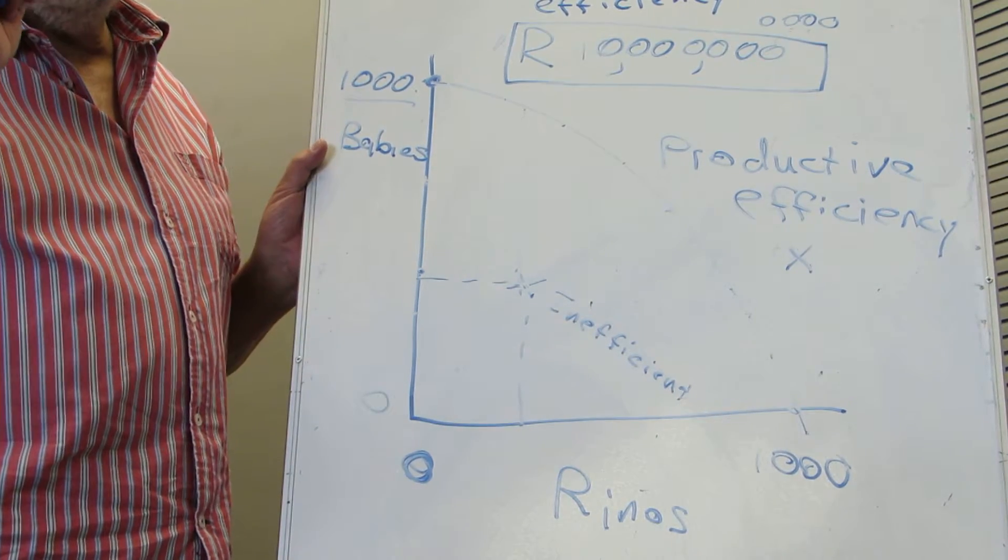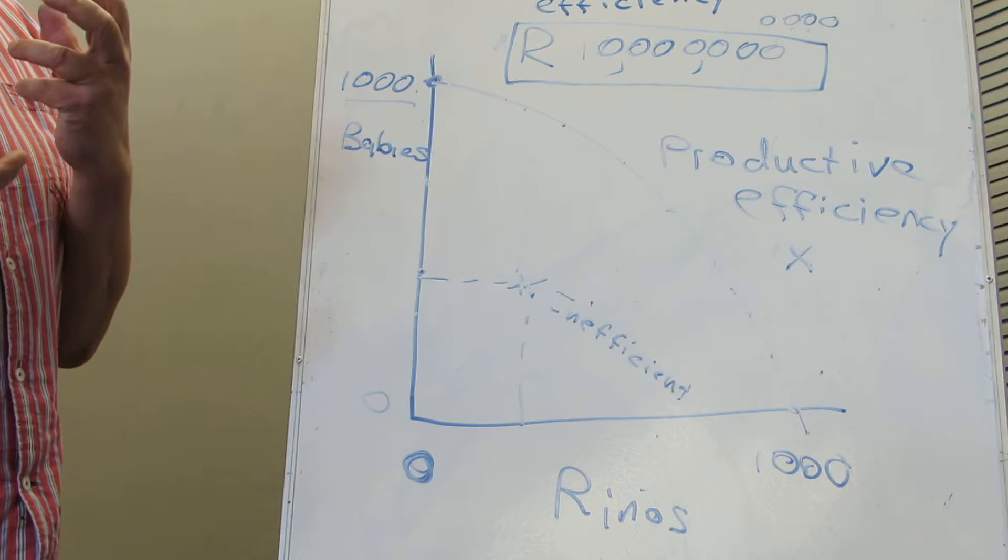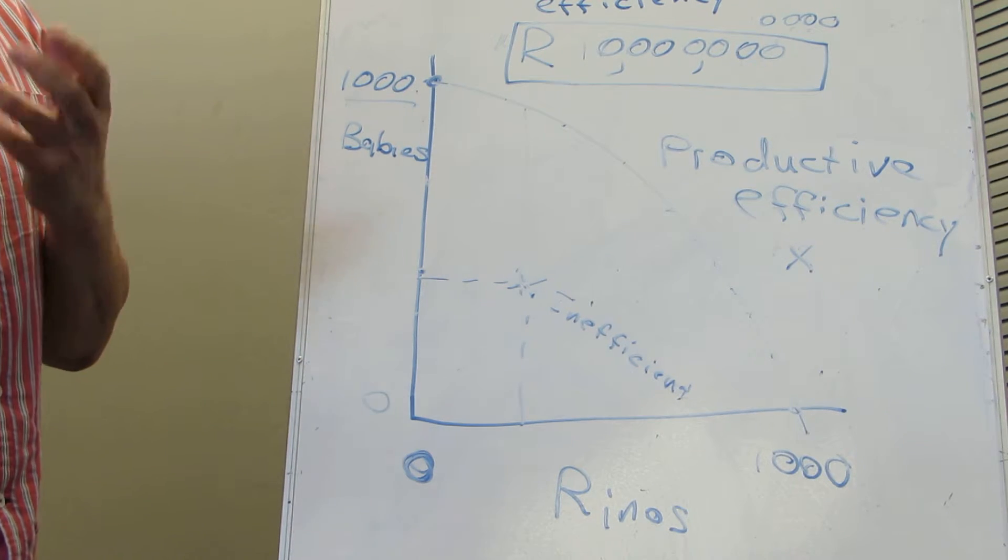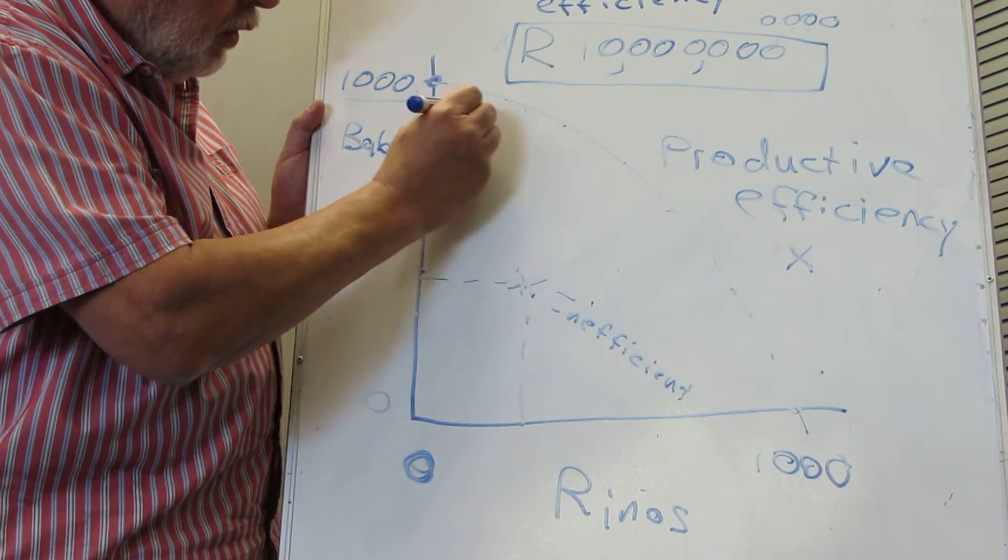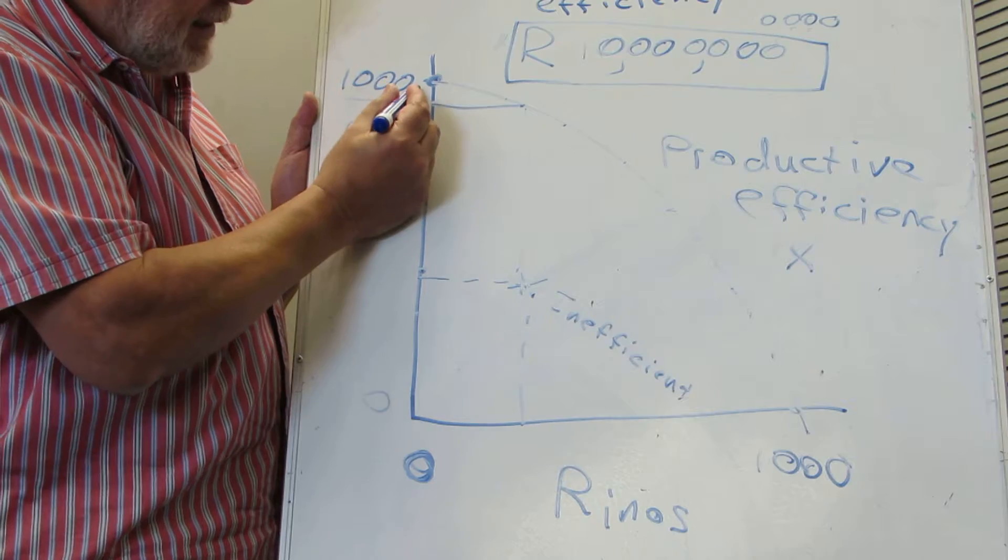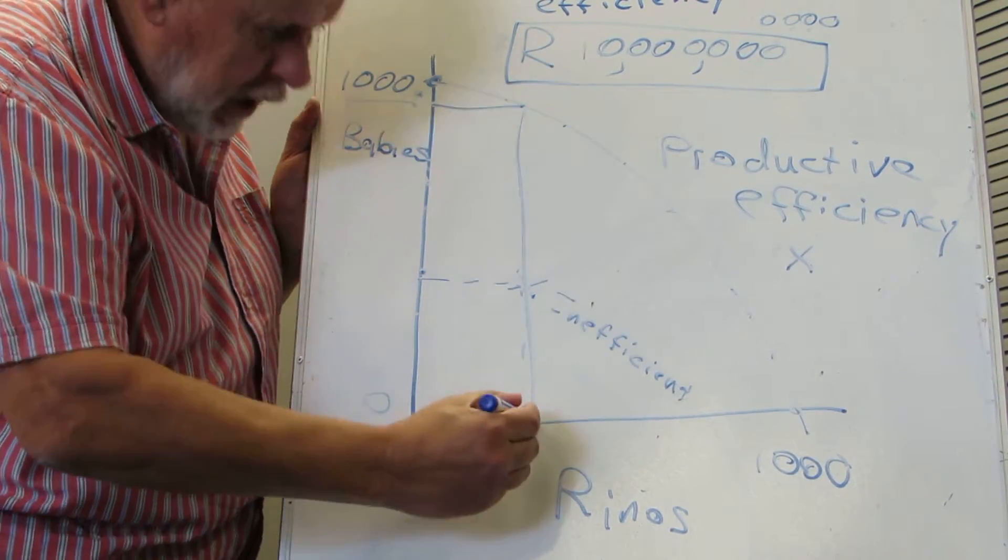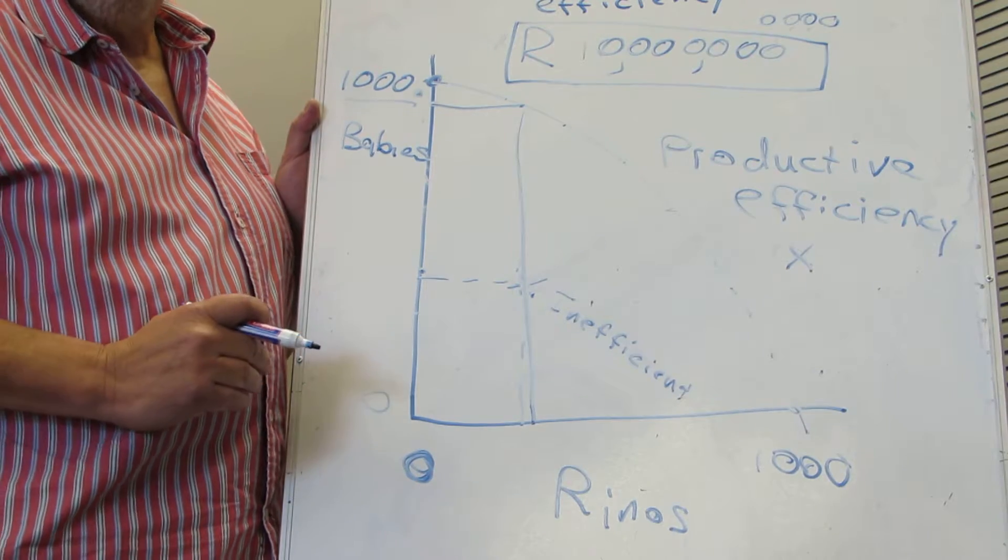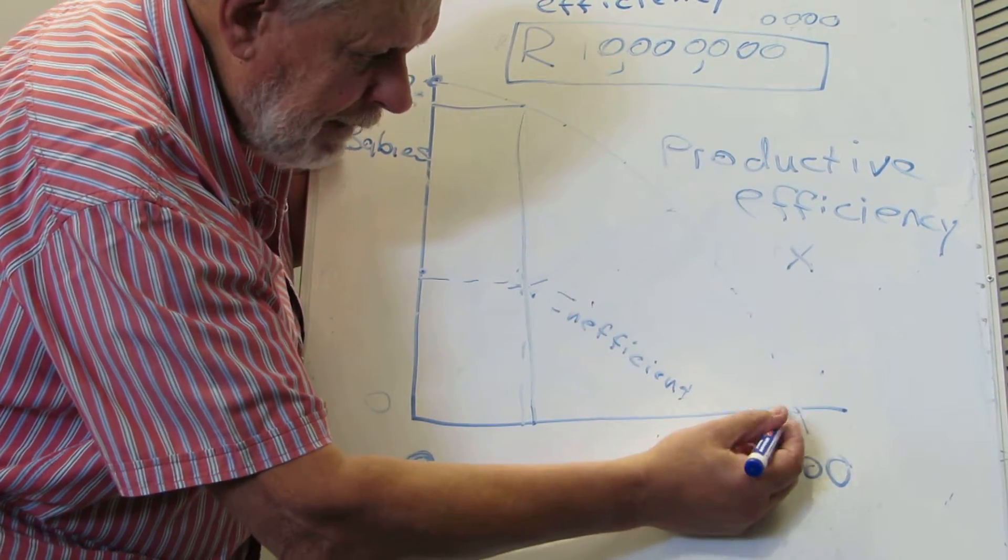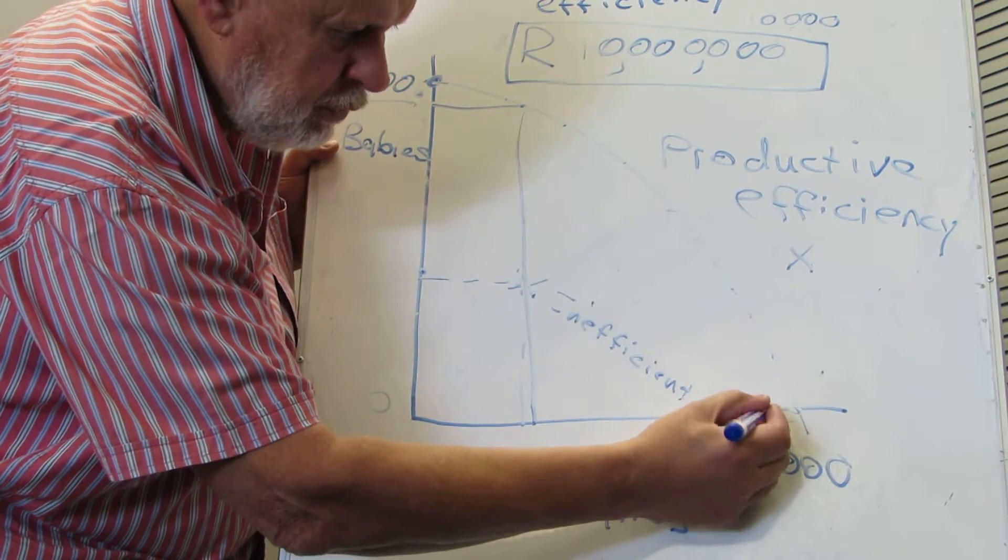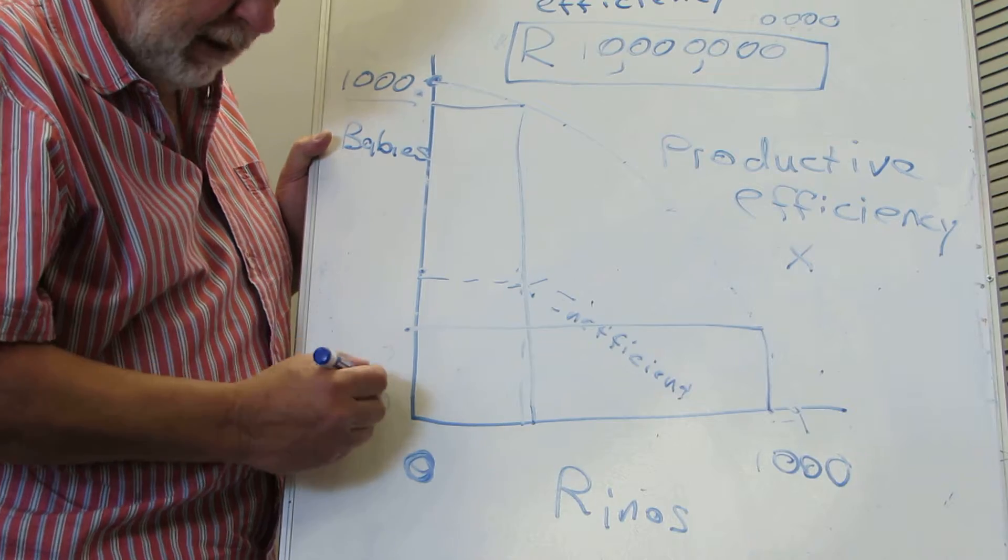Now I'd like to show you an interesting little point that indicates opportunity cost. Can you see over here, by just giving up a few babies, we gain a lot of rhinos. And over here, by giving up just one or two rhinos, we can save a lot of babies.